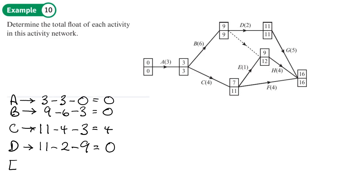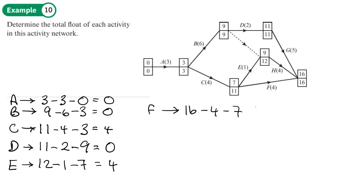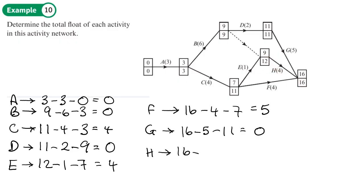Activity E: 12 minus 1 minus 7, leaving a float of 4. Activity F: 16 minus 4 minus 7, leaving a float of 5. Activity G: 16 minus 5 minus 11, leaving a float of 0. Activity H: 16 minus 4 minus 9, leaving a float of 3.